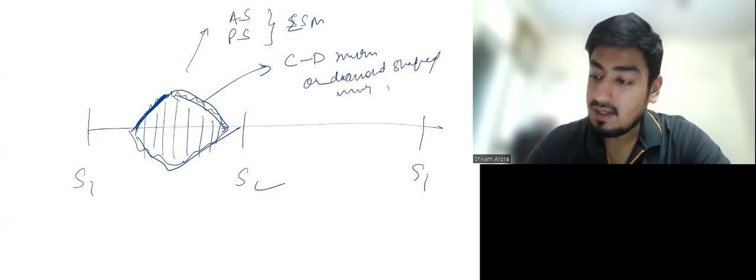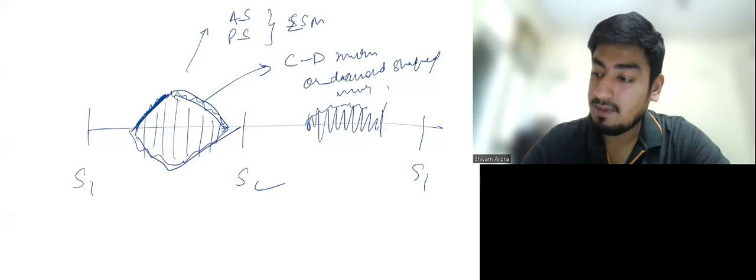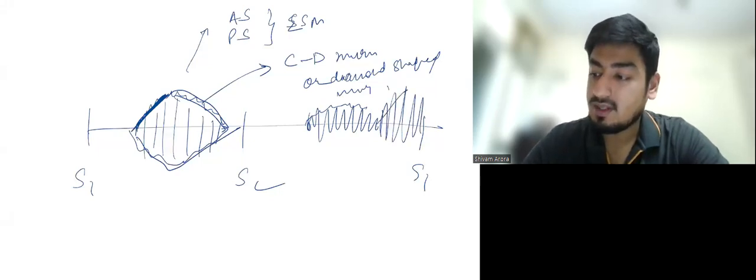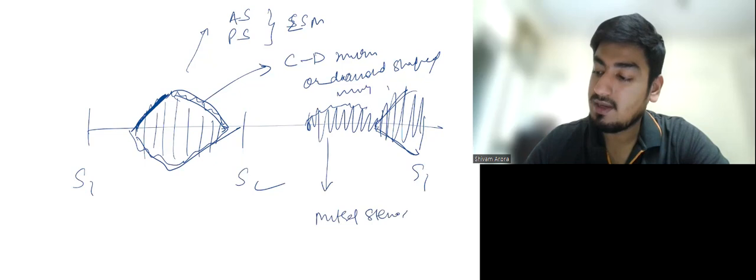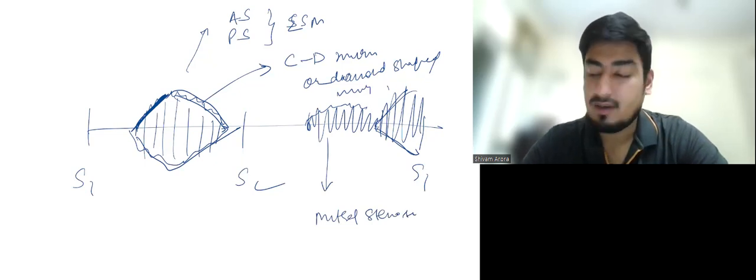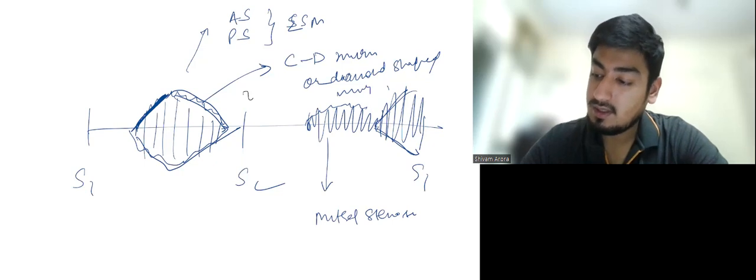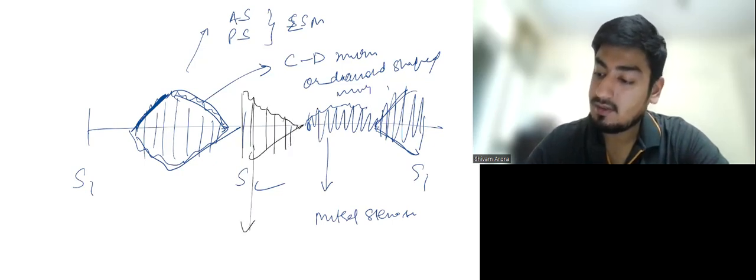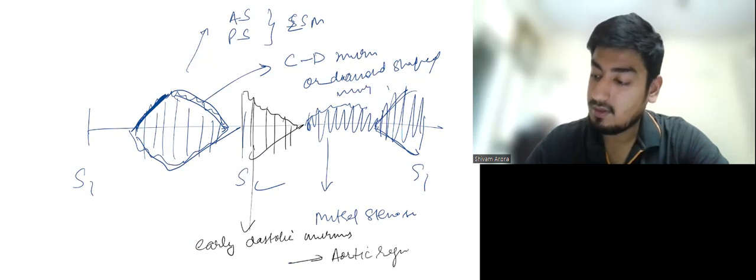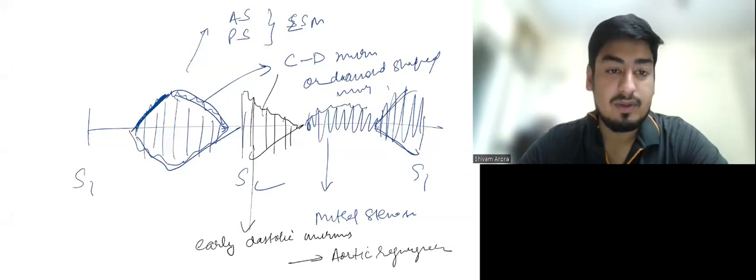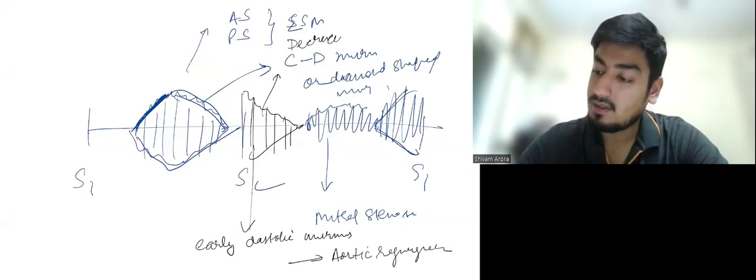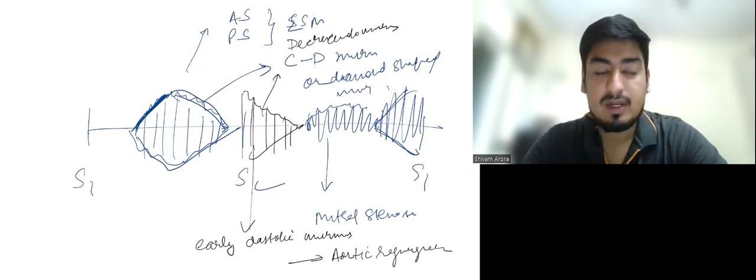Now diastolic murmur. In diastolic murmur, we have this mid-diastolic murmur with pre-systolic accentuation. Just before systole, due to atrial contraction, the murmur increases in mitral stenosis. So mitral stenosis will be having mid-diastolic murmur with pre-systolic accentuation. Also we can have this early diastolic murmur in aortic regurgitation, which is also known as decrescendo murmur, as the murmur keeps on decreasing in time.